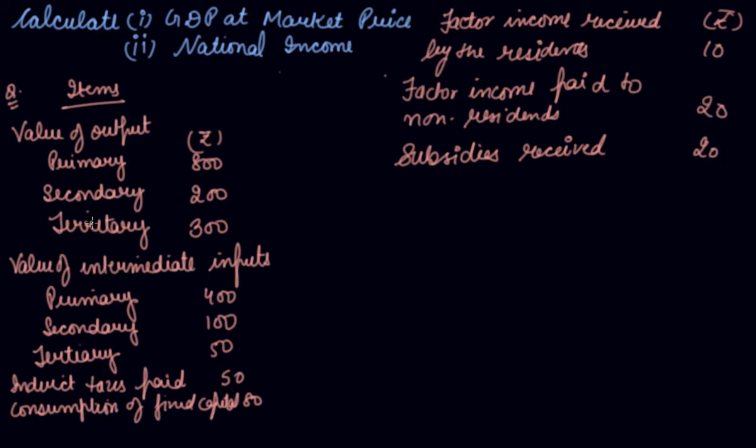I told you before that your value of output includes the value of goods and services from all the three sectors. Your GDP at market price is calculated by the value added method by adding sales plus change in stock minus intermediate consumption. So, your sales here are 800 plus 200 plus 300. Your change in stock is not given in the question. Your intermediate inputs are given minus 400, minus 100, minus 50. With this, you get Rs. 750 as your answer, which is your GDP at MP.